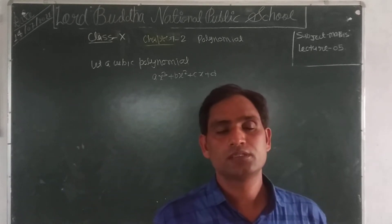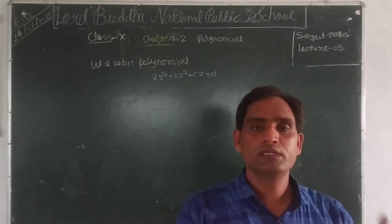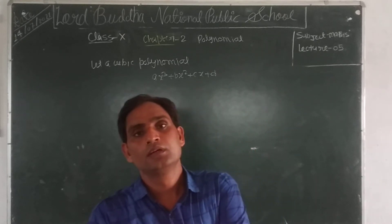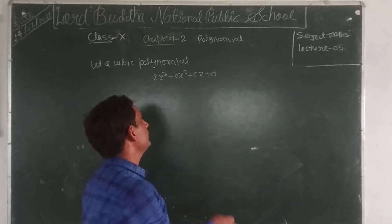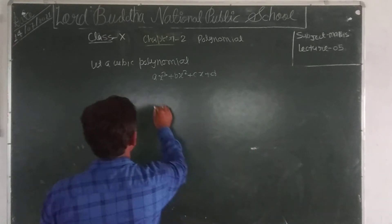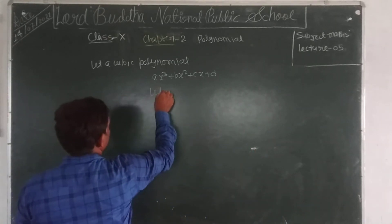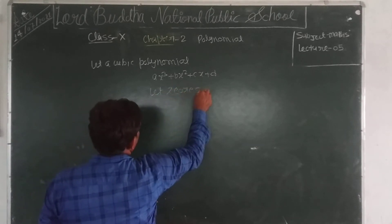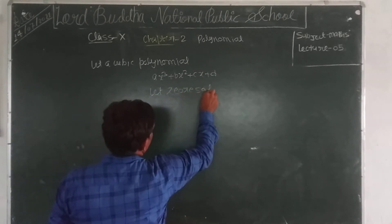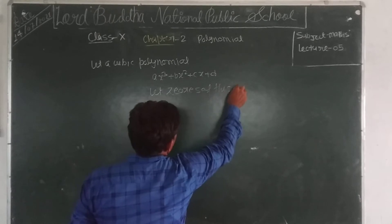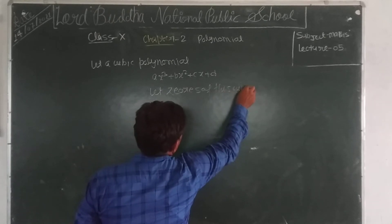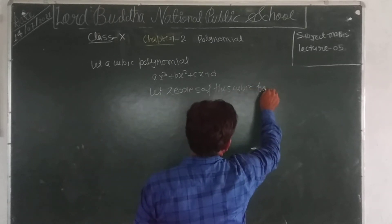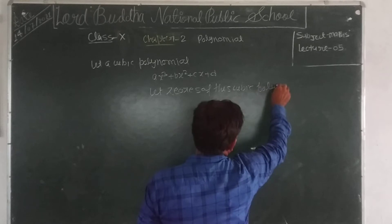The number of zeros of a cubic polynomial will be three. Let the zeros of this cubic polynomial be alpha, beta, and gamma.